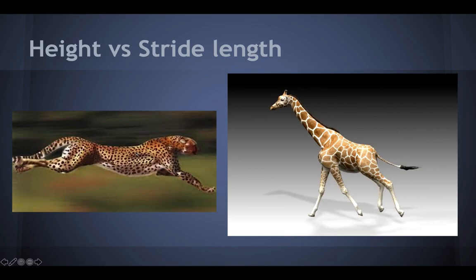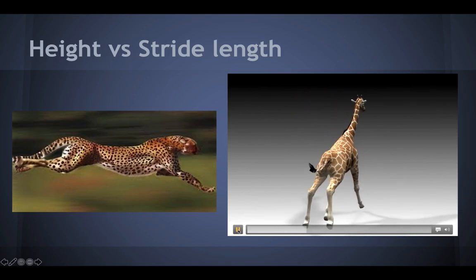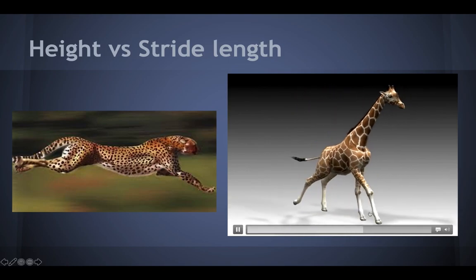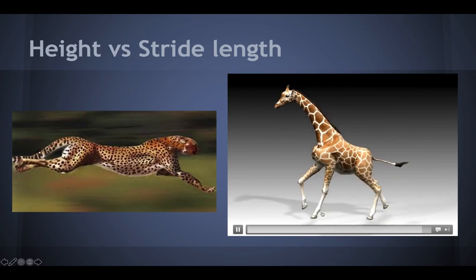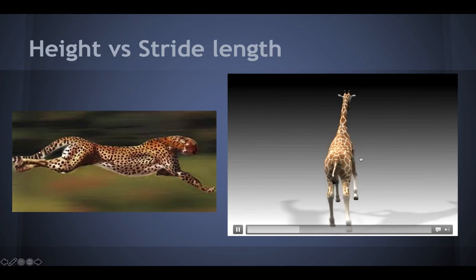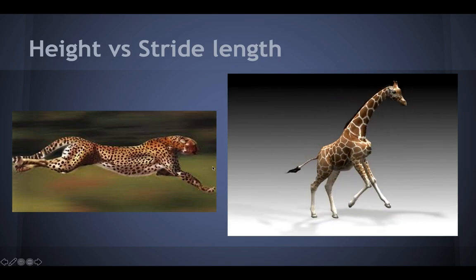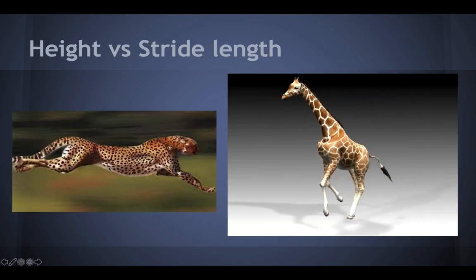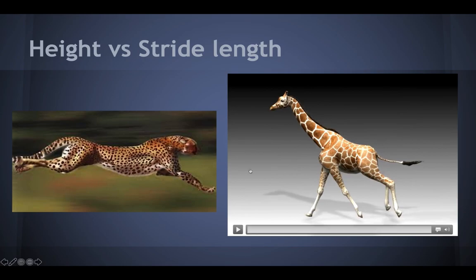Here's another example: height versus stride length. The cheetah — not very tall, but look at that stride length. One of the fastest land animals there is, covering a lot of distance between each stride. And then we have the giraffe — super tall, but look how small that stride length is. It depends on the anatomy of their hips; their joints don't really move very much compared to the range of motion in the cheetah.